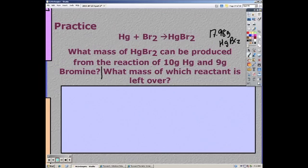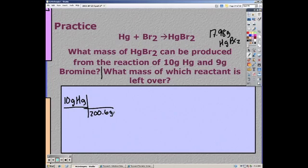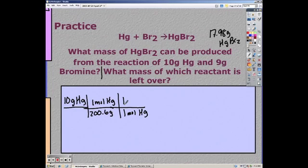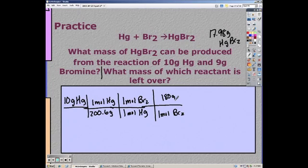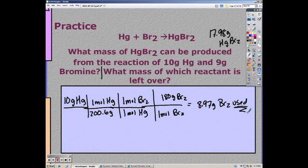So I start with my limiting, which was 10 grams of mercury. And I'm going to convert this to grams of bromine because that's what unit my original amount was given in. So I have 8.97 grams of bromine used. If I use all 10 grams of mercury, I'm going to need 8.97 grams of bromine.